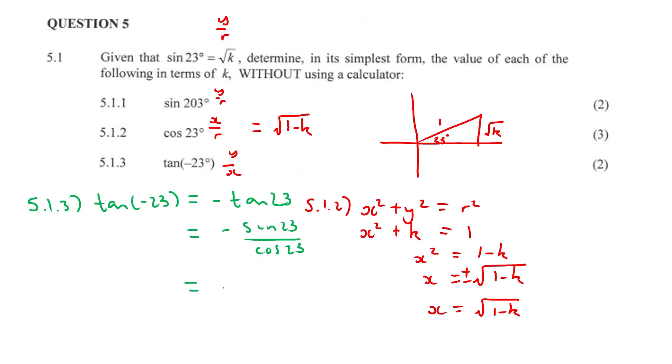And we know that sine 23 is equal to root K. That's been given in the question. And we know that cos is X over R. Our R value is just 1. So that's going to be root 1 minus K. That's going to be in our denominator.